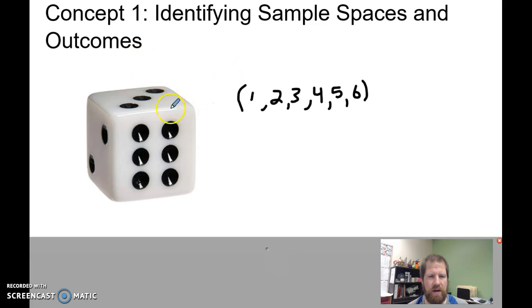And then my outcome, well, in this case, my outcome is going to be 3. So for this one, my sample space is 1, 2, 3, 4, 5, and 6, and my outcome is 3.